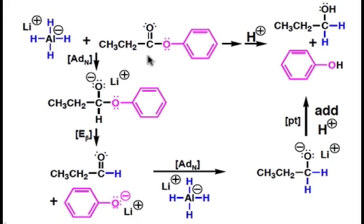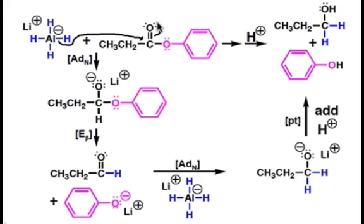Now let's take a look at how this same ester can be converted into a primary alcohol when treated with lithium aluminum hydride. This process takes place by the same substitution addition mechanism, wherein lithium aluminum hydride is a source of nucleophilic hydride species that can attack the carbonyl carbon in an ADN step. This kicks up a lone pair of electrons to create a new tetrahedral intermediate.